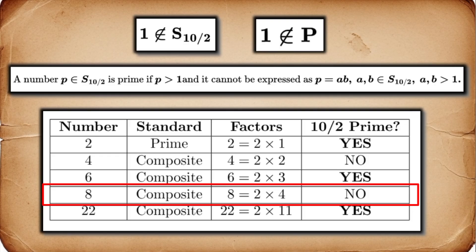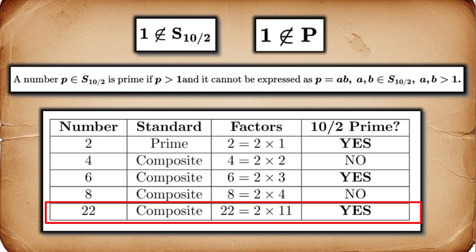Let's try 8. 8 equals 2 times 4. Both 2 and 4 are in S10 over 2. So, 8 is composite. Now, let's jump to a bigger one, 22. Is 22 a standard prime? No. It's 2 times 11. But is 11 in S10 over 2? No. It contains the digit 1. There are no two numbers greater than 1 in S10 over 2 that we can multiply to get 22. Therefore, in the 10 over 2 system, 22 is prime.